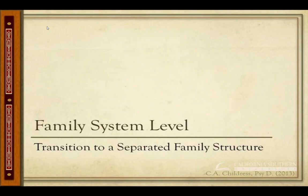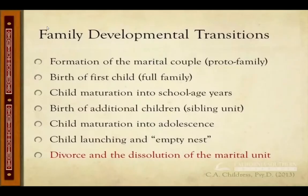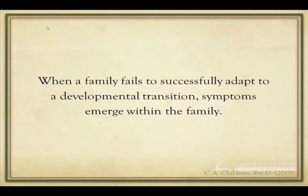From a family systems perspective, families go through transitions. For example, the birth of the first child, the child's maturation into preschool years or adolescence, or the launching of the child into adulthood — all of those involve transitions. If a family fails to make a successful transition, symptoms emerge. The divorce and dissolution of the marriage represents another transition in the family, and this family, from a family systems perspective, is having difficulty — not successfully transitioning to the loss of the marriage.